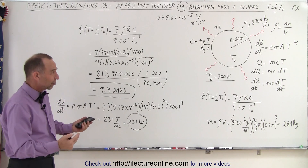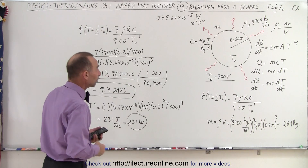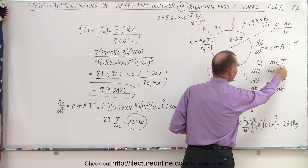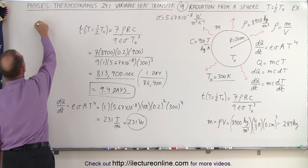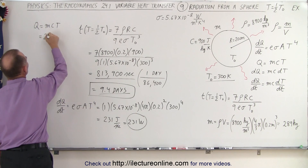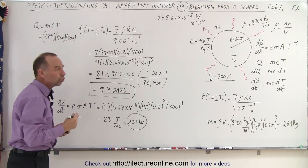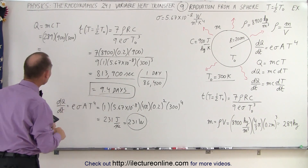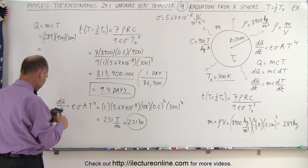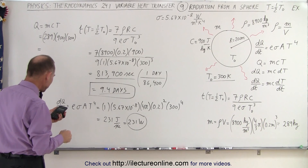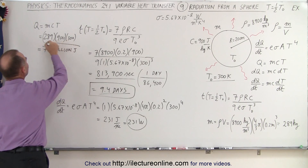So 231 watts — that's not a lot of heat coming out of that sphere per unit time. And if you think about how much heat that sphere contains initially, we can use the equation Q = m·C·T. I've already calculated the mass, so Q equals 289 kilograms times 900 times 300 — that would be 78 million joules of heat to begin with.